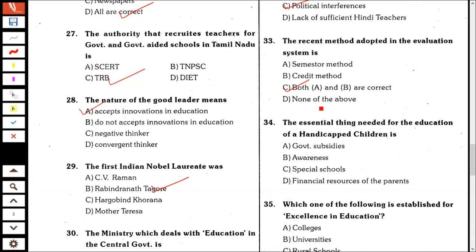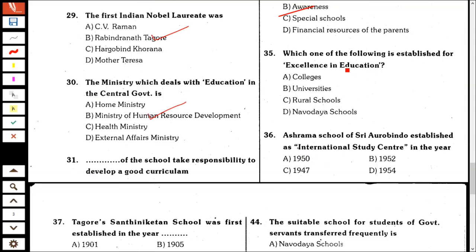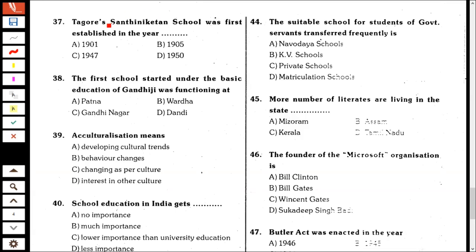Recent methods adopted in the evaluation system are semester method and credit method — both are correct. The essential thing needed for the education of handicapped children is special schools. Which one of the following is a provision for excellence in education? It is the Navodaya School. The Ashrama school of Sri Aurobindo was established as an international study center in the year 1952. Tagore's Shanti Niketan school was first established in the year 1901. The first school started under the basic education of Gandhiji was functioning at Wardha.